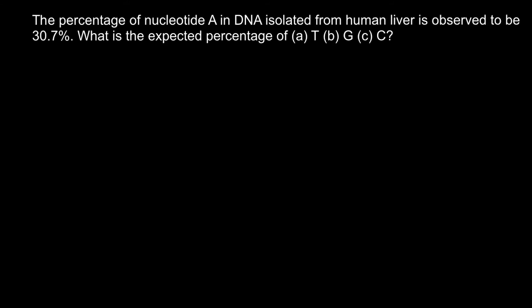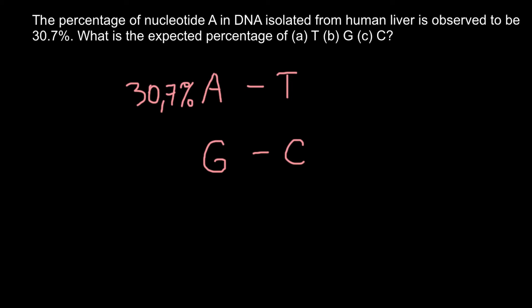In order to solve this problem, everything you have to know is that adenine always pairs with thymine, and guanine always pairs with cytosine. We are given that adenine makes 30.7%, and that means the quantity of thymine would be the same as adenine — so thymine is also 30.7%.